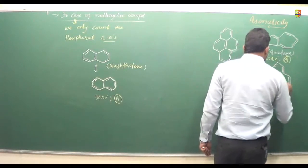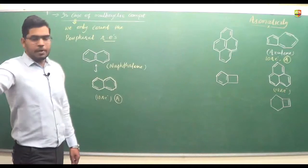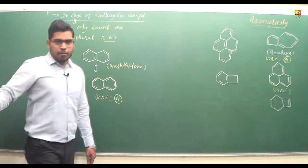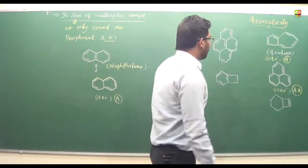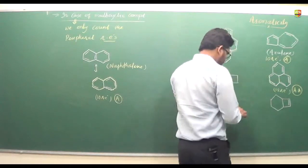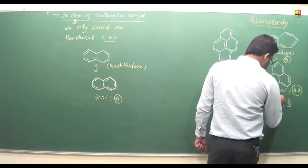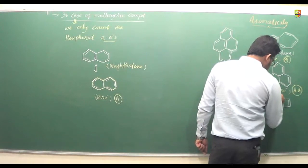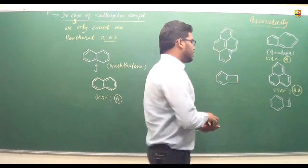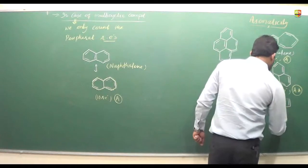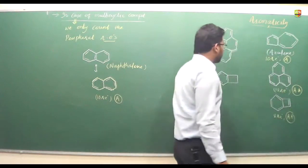With 12 pi electrons, we can say it is anti-aromatic in nature because it has 4n pi electrons. In another example — I forgot to write the double bond, this should be a double bond — we count 2, 4, 6, 8 — that is 8 pi electrons. This also follows the anti-aromatic rule.